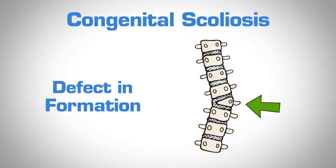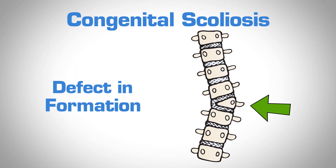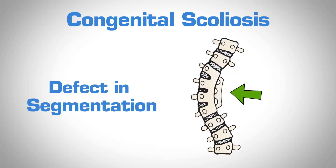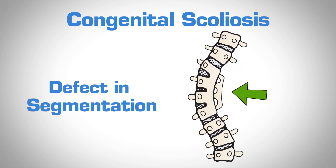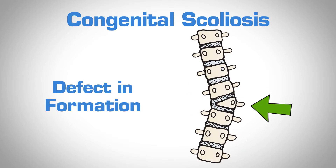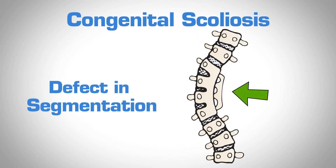Congenital scoliosis is a spine deformity that is present at birth, because there has been either a defect in formation of a vertebral body, or there is a defect in the segmentation between the vertebral bodies. In other words, a part either didn't get formed properly at all, or the parts that were formed never separated into separate vertebral bodies.